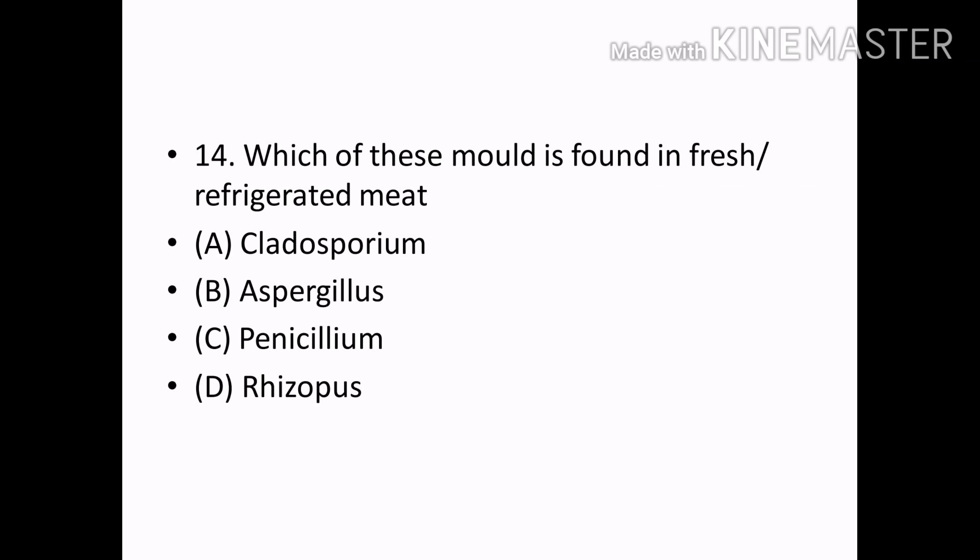Which of these molds is found in fresh or refrigerated meat? Options — Cladosporium, Aspergillus, Penicillium, Rhizopus. Correct answer: Option A — Cladosporium.